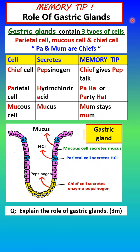Here's a useful memory tip for those who want to remember the role of gastric glands in digestion. A gastric gland is a tissue that contains different types of cells. Three types of cells we need to know are the parietal cell, mucus cell, and chief cell in the gastric glands. Remember: Pa and Mum are Chiefs — Pa for parietal cell, Mum for mucus cell, and Chief for chief cell.